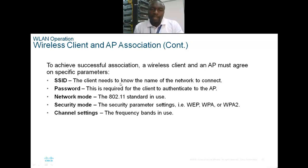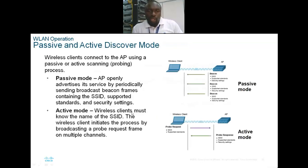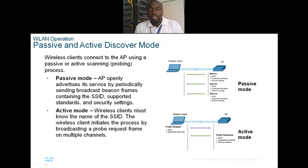To achieve association, a wireless client and AP must agree on specific parameters: the SSID — the name of the network; the password required for authentication; the network mode and standards being used; the security type — WEP, WPA, or WPA2; and the channel settings, which is the frequency band being used. Clients connect to an AP using passive or active scanning.